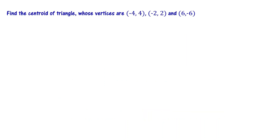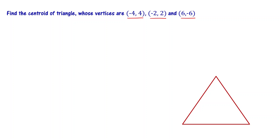Find the centroid of the triangle whose vertices are minus 4 comma 4, minus 2 comma 2, and 6 comma minus 6. The centroid of a triangle — it has three vertices and three sides. I will draw a line connecting one vertex with the center of the side opposite to it. Drawing the second line and third line, the point where these three lines intersect is the centroid of the triangle.